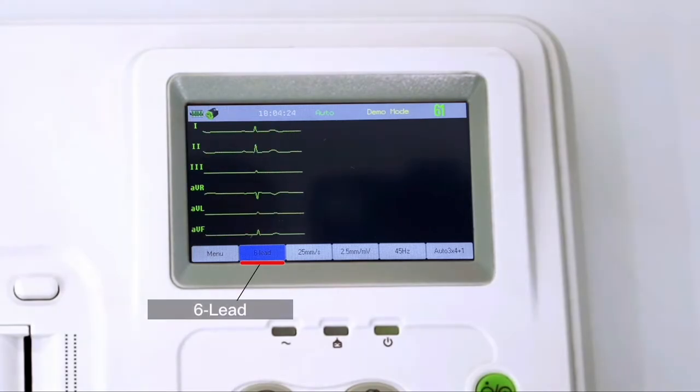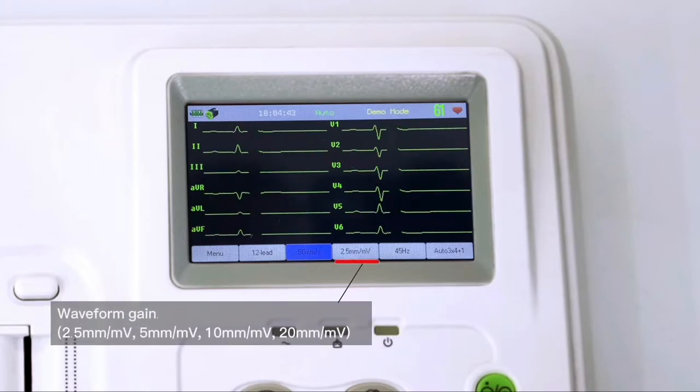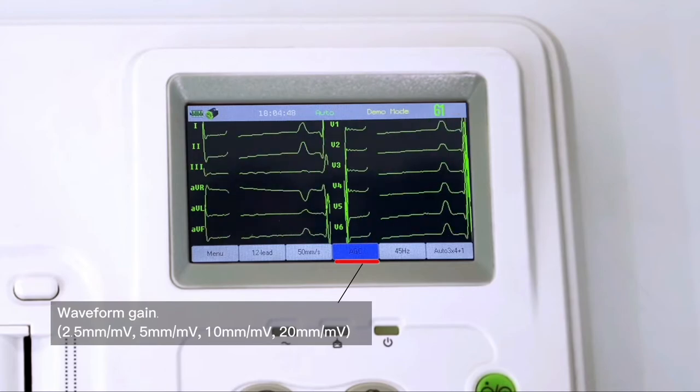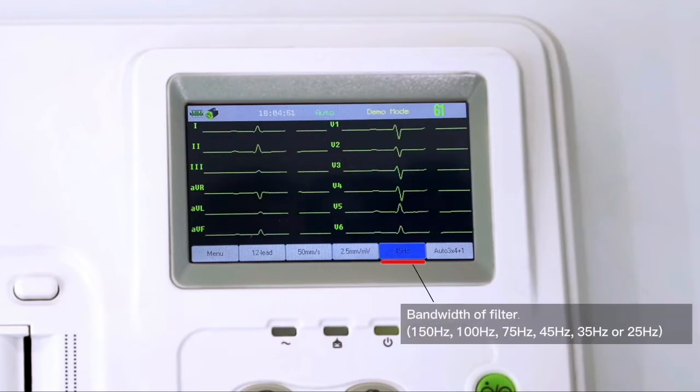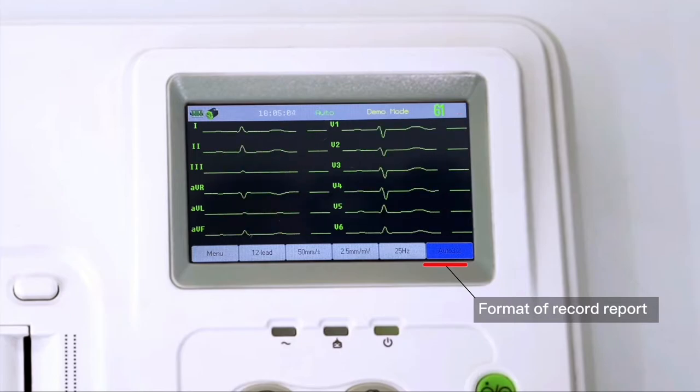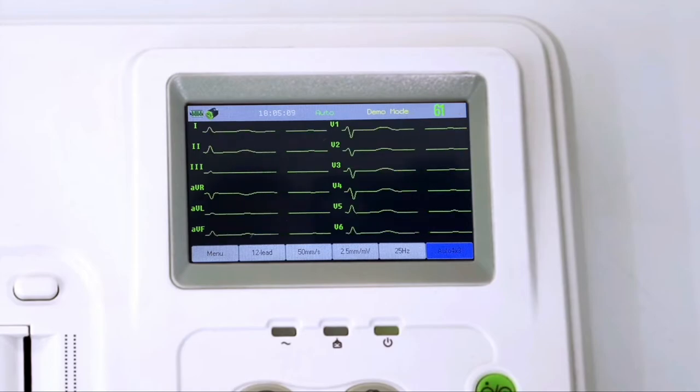Press here to select the lead number on screen display: one lead, three lead, six lead, or twelve lead. Press here to adjust the waveform scanning speed and the paper moving speed of recorder. Press here to adjust the waveform gain. Press here to adjust the bandwidth of filter. Press here to select the format of record report. After setting up, these settings will be the default each time the device is turned on.